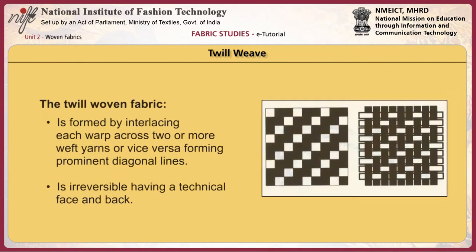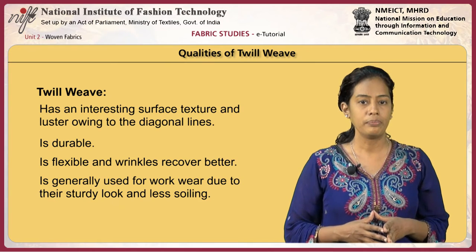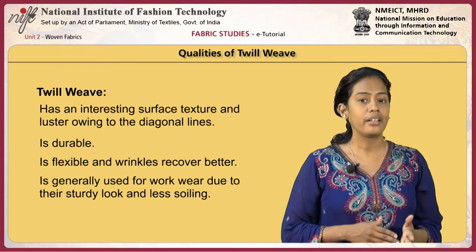Twill woven fabric is formed by interlacing each bar across two or more weft yarns or vice versa, forming prominent diagonal lines. These fabrics are reversible, having a technical face and back. The diagonal lines reverse in direction — if they go left on the face side, they go right on the back side. Twill weave is durable and has an interesting surface texture and lustre owing to the diagonal lines. They are flexible and wrinkles recover better.